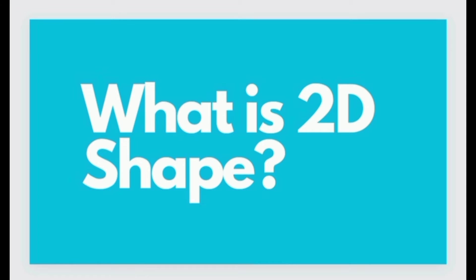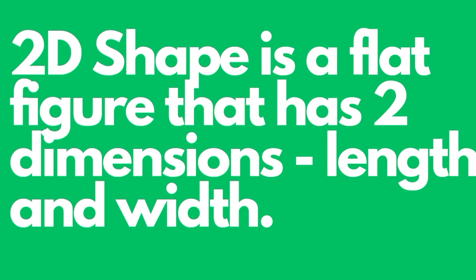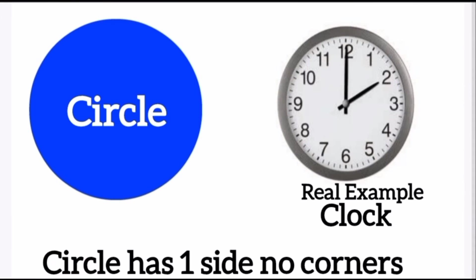Now, what is a 2D shape? In one sentence, we can say a 2D shape is a flat figure that has two dimensions: length and width. Let's look at some common 2D shapes and their properties.